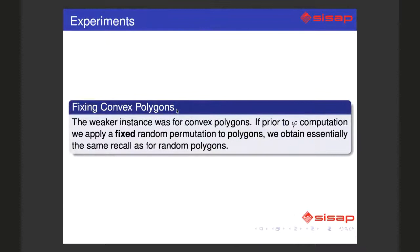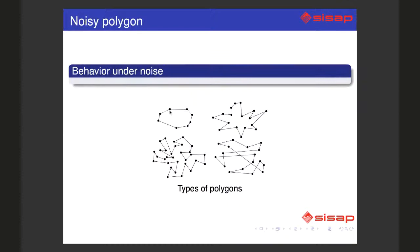The solution is quite trivial after you see it, and it is to apply a random permutation to the polygon. What would be a random permutation?